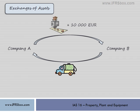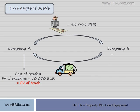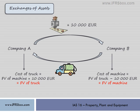Then Company A would recognize the truck at a cost equal to its fair value, which would be the same as the fair value of the machine plus €10,000. Company B would recognize the machine also at the cost equal to its fair value, which would be the same as the fair value of the truck less €10,000. Any gains or losses from such transactions shall be recognized in profit or loss.